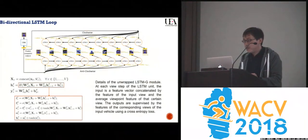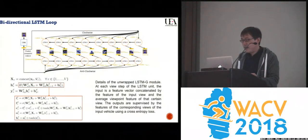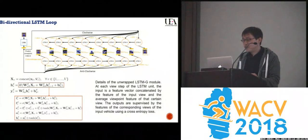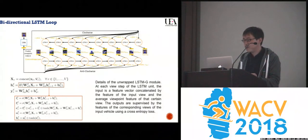The generative and discriminative nets are both based on a bidirectional LSTM loop. At each view step of the LSTM unit, the input is a feature vector concatenated by the feature of the input view and the average viewpoint feature of that certain view.